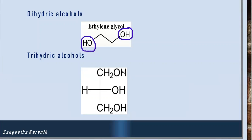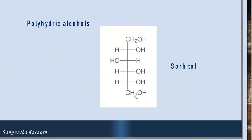Trihydric alcohols have three OH groups in one molecule; the example is glycerol. There can also be more OH groups in a single molecule, and those are called polyhydric alcohols. Here we can see there are one, two, three, four, five, and six OH groups in one molecule, so the example is sorbitol.